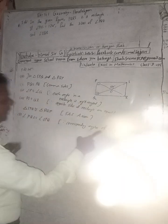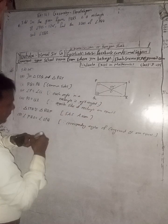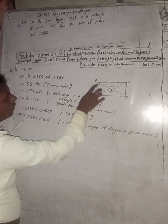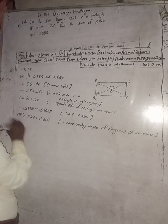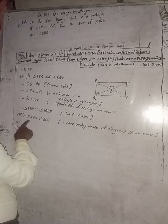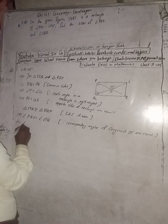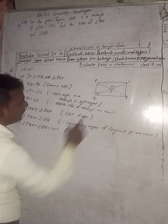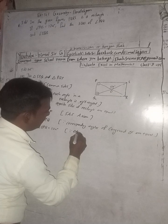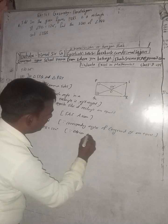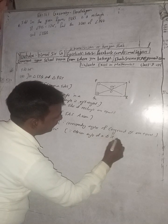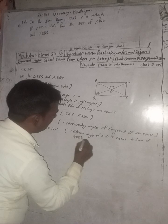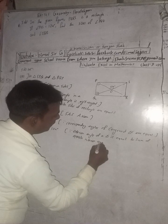Now, angle PQO plus angle OPQ equals 124 degrees. The reason is that the exterior angle of a triangle is equal to the sum of the two opposite interior angles.